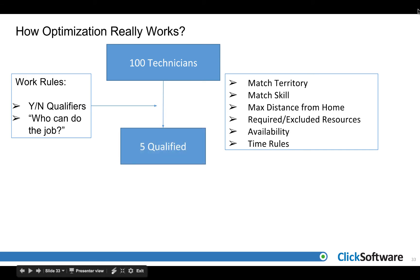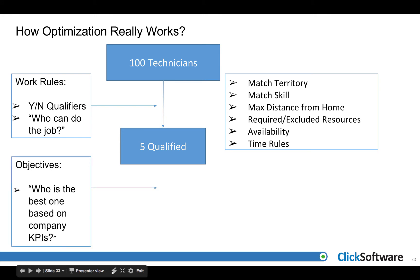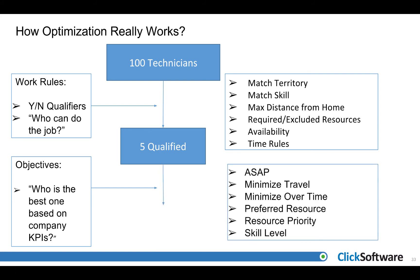Now with a few qualified candidates at hand, service objectives will help to define the most optimal resource for the job. Clearly, what constitutes optimal will vary greatly from one service organization to another. One might be concerned about top customer service levels, aiming to schedule as soon as possible at all costs, while others will look to contain operational costs such as overtime and travel. Most often, companies will strive to strike a balance between these. In one of our next videos, we will explore the six service objectives available in Field Service Lightning.